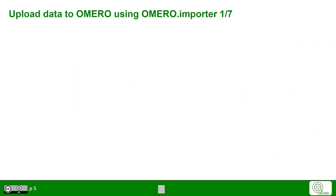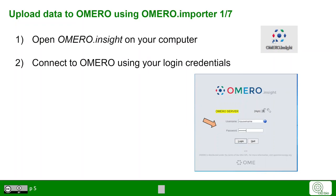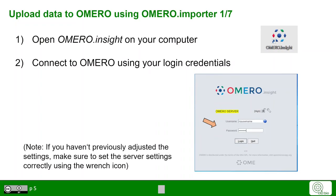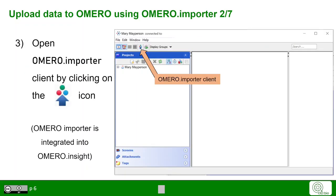Let's take a look at data upload using Omero Importer, for which you need to open Omero Insight on your computer and log in with your login credentials. If you haven't previously adjusted the settings, make sure that the server settings are correct by using the wrench icon. After logging in, you can upload data to Omero by using Omero Importer, which you can choose by clicking on the respective icon.